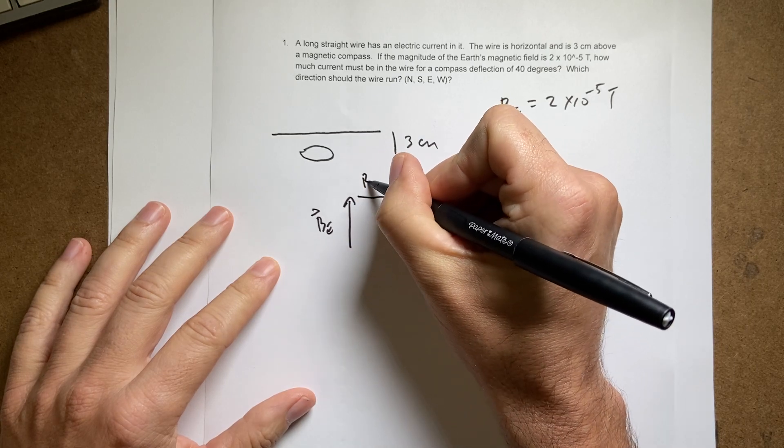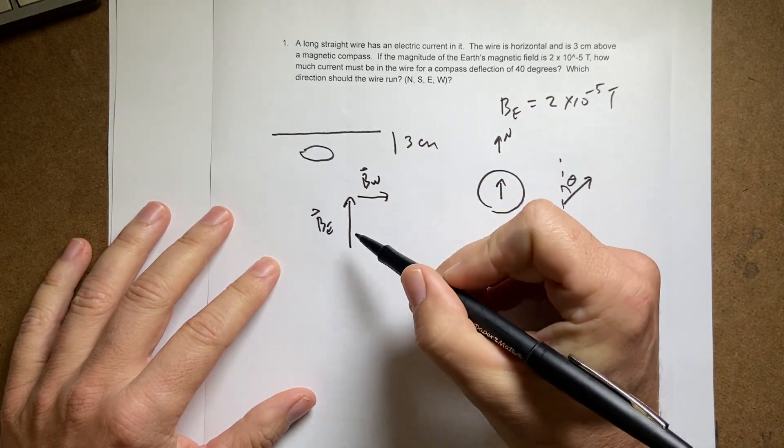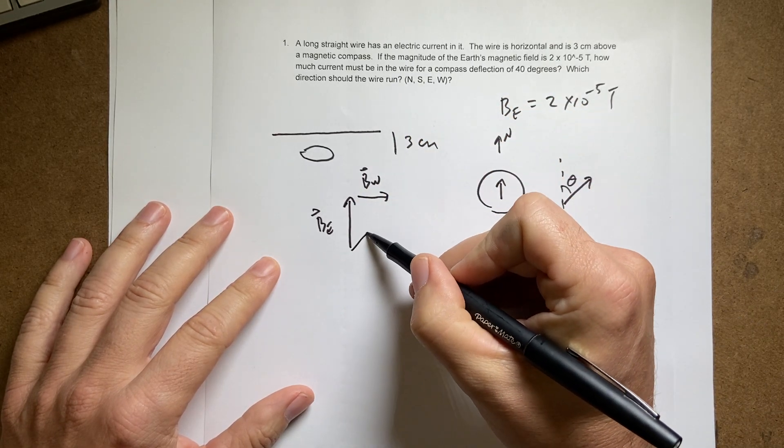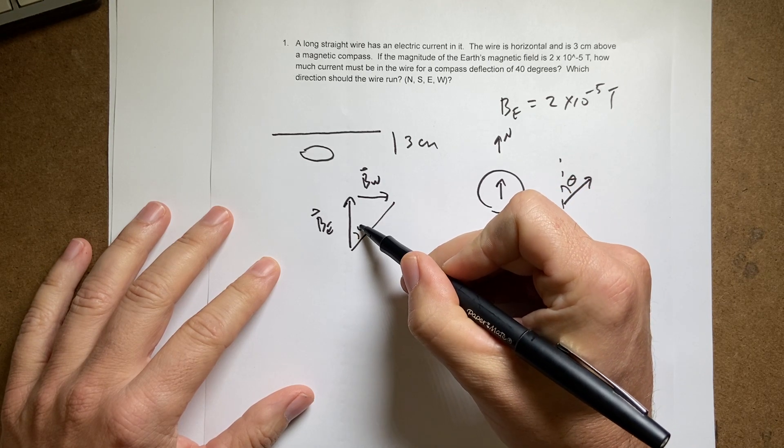And then I want B wire, the magnetic field due to the wire like that, perpendicular to it, such that this angle is 40 degrees.